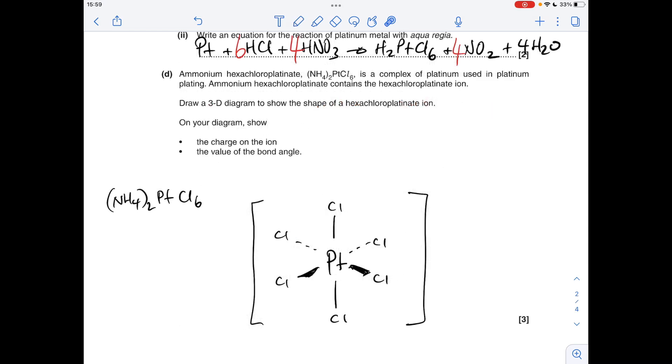So moving on to part D now, we've got to come up with a 3D diagram to show the shape of the hexachloroplatinate ion. So I've got so far with it, I'm just going to explain where the charge comes from. Then we'll do the bond angle. So if you know your ions, you'll know that ammonium ions have a 1 plus charge. We've got two of them. So there must be 2 plus from those two ammonium ions. So that means this negative component must be 2 minus in charge. We've got an octahedral complex and the Cl, Pt, Cl bond angles are all 90 degrees.